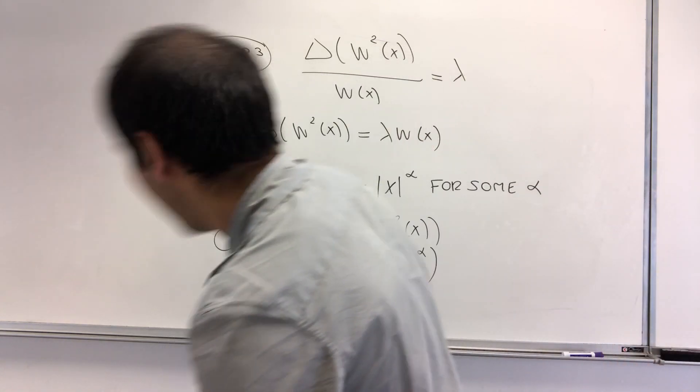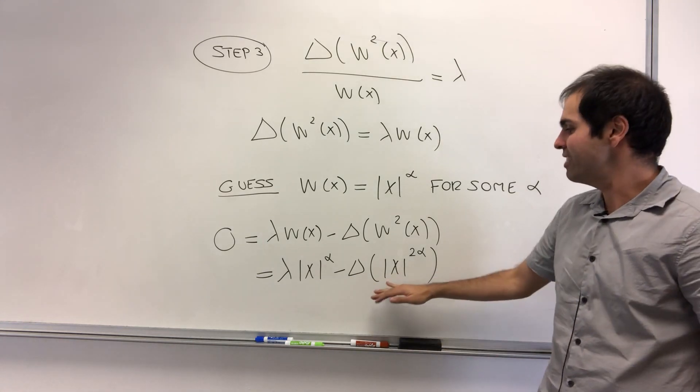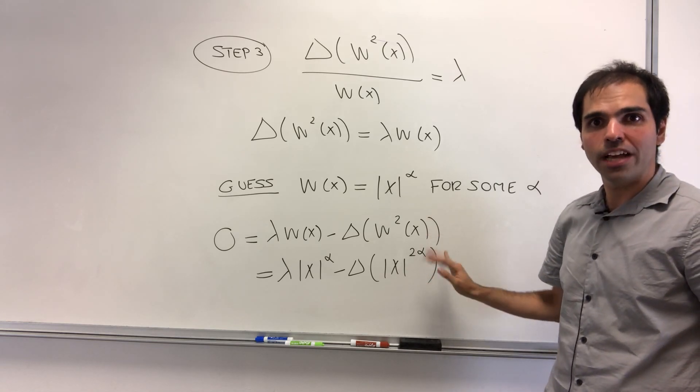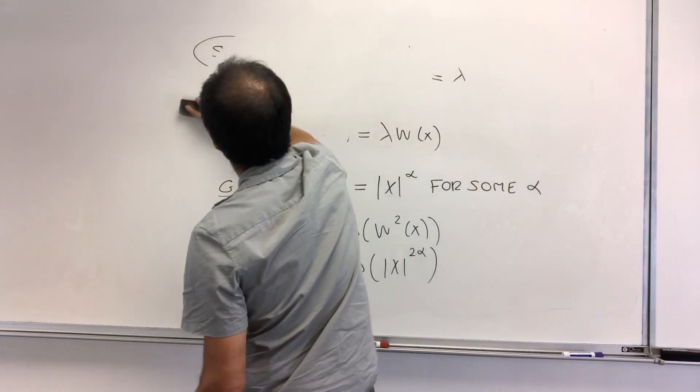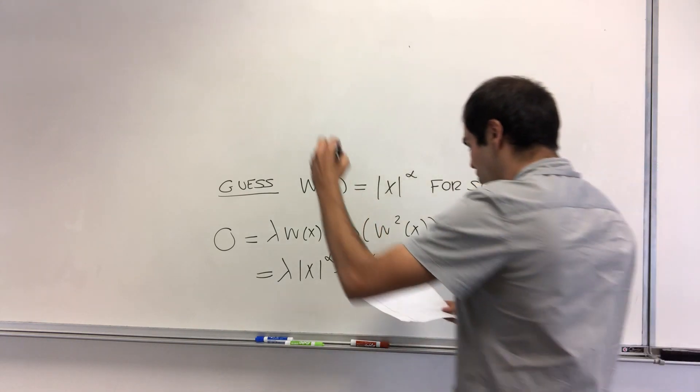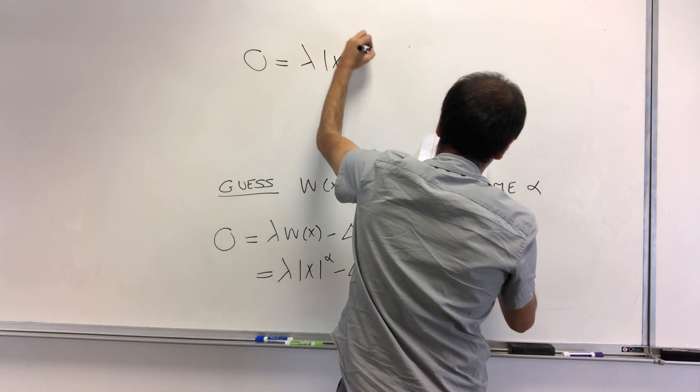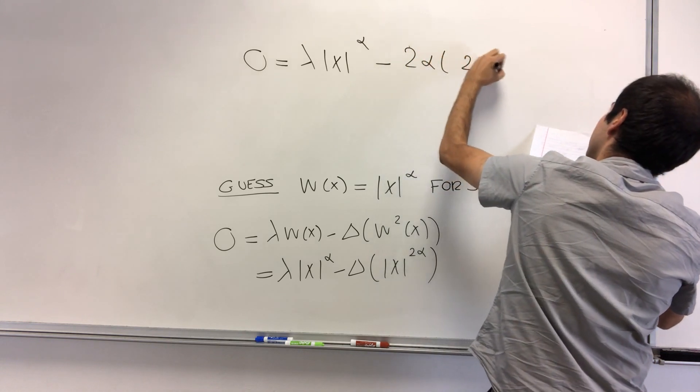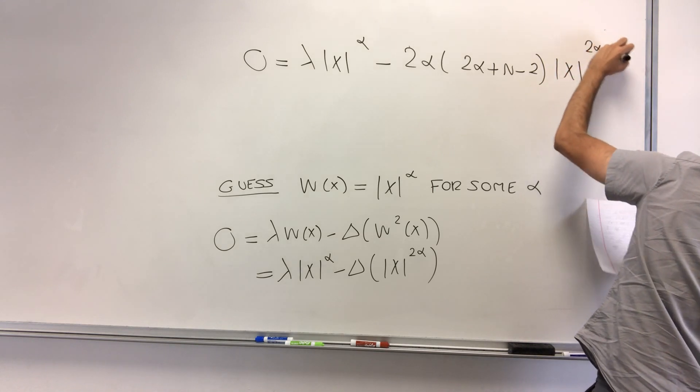Okay, and then this, I have calculated Laplacians in the Laplace equation video, so feel free to watch that, and I did obtain a general form for the Laplacian of a power function, which I won't repeat here. And what we get in the end is zero equals lambda x to the alpha minus 2 alpha times 2 alpha plus n minus 2 times x to the 2 alpha minus 2.